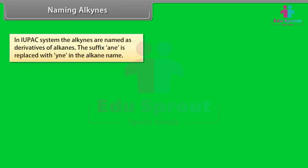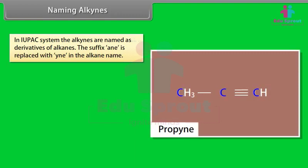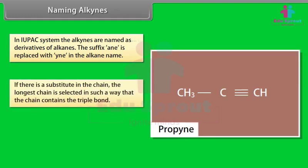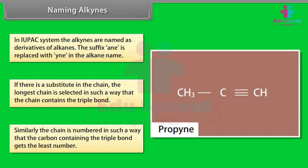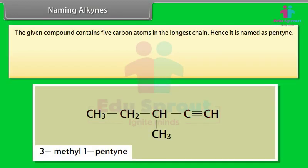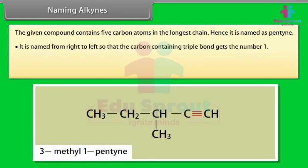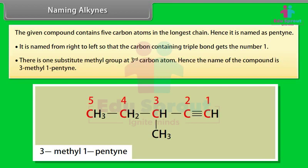Naming Alkynes: In the IUPAC system, alkynes are named as derivatives of alkanes. The suffix '-ane' is replaced with '-yne'. For example, a compound with three carbon atoms has the root name propane, so replacing '-ane' with '-yne' gives propyne. If there is a substituent in the chain, the longest chain is selected to contain the triple bond, and the chain is numbered so that the carbon containing the triple bond gets the least number. For example, a compound with five carbon atoms in the longest chain is named pentyne. If numbered right to left so the triple bond carbon gets number 1, and there is a methyl group at the third carbon, the name is 3-methyl-1-pentyne.